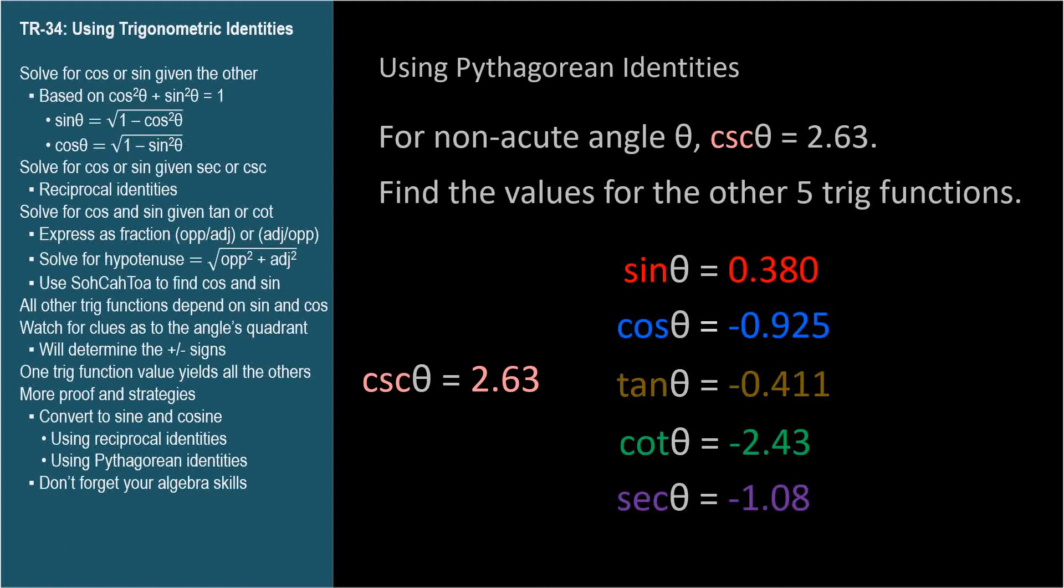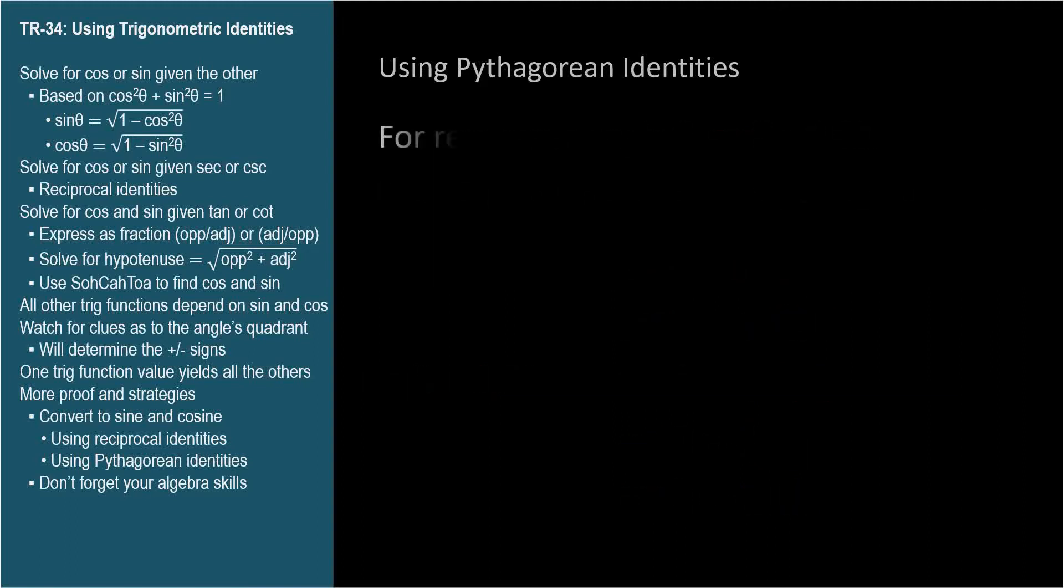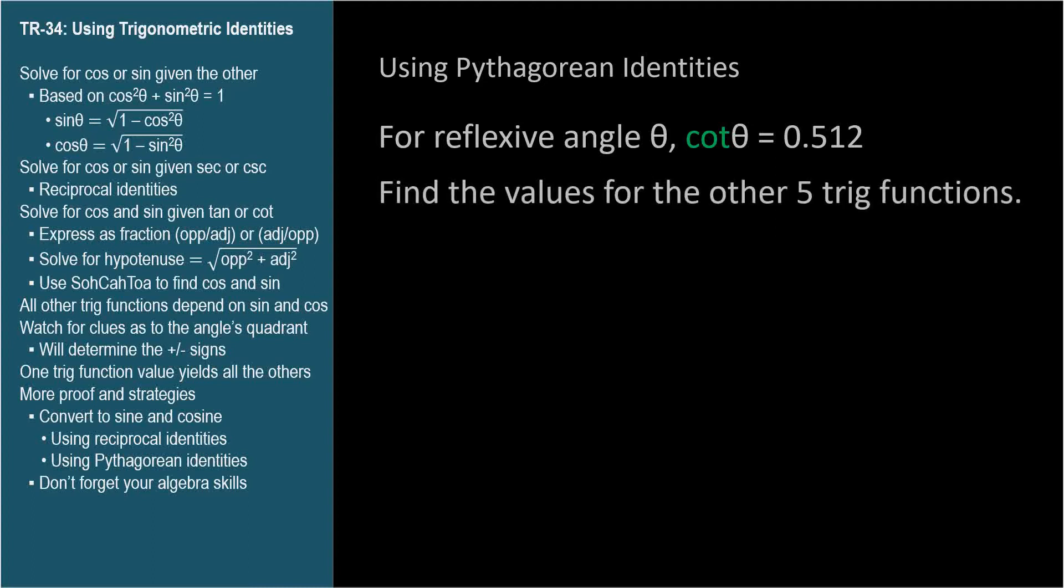For a reflexive angle theta, we're told that the cotangent is 0.512. Find the values for the other five trig functions. When given tangent or cotangent, express it as a fraction.